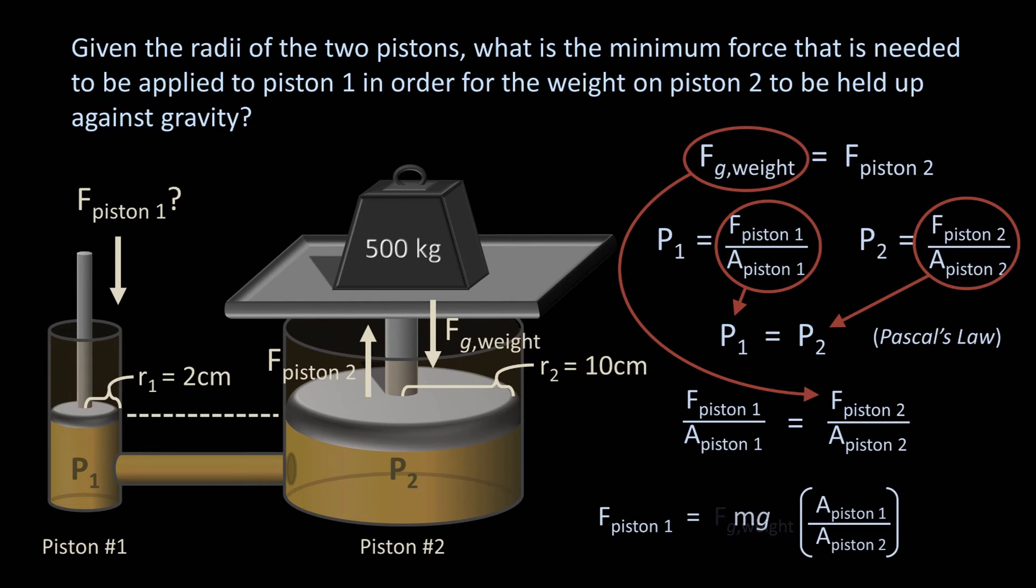Force of gravity is mass times g, and our areas are pi r squared. And if we plug in the numbers, we get a total force of 196 newtons. That's the same force that a 20 kg weight has as a consequence of gravity. So the force that you would need to generate in order to lift a 20 kg weight if directed onto piston 1 would be enough to hold up a 500 kg weight sitting on piston 2.